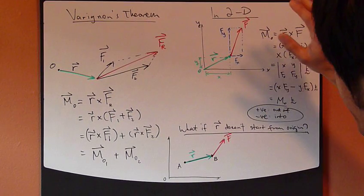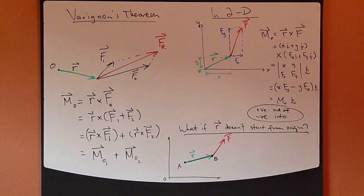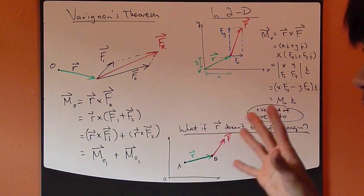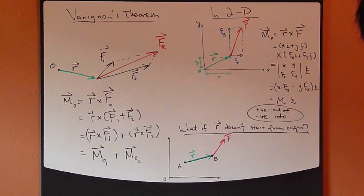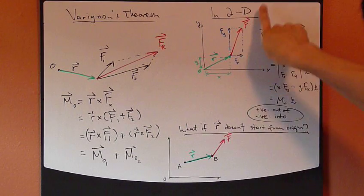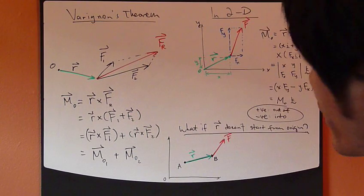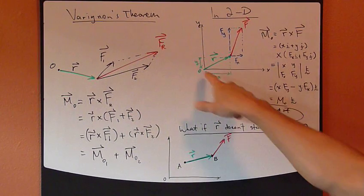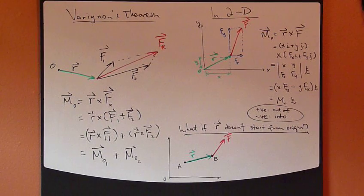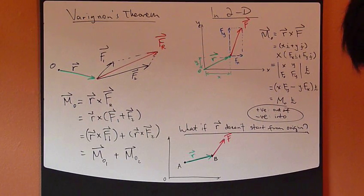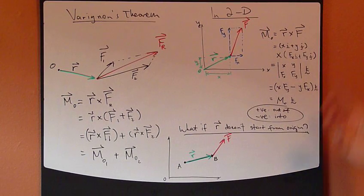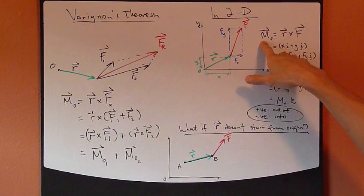So now kind of a special case. We talked about the general, like three-dimensional space. Now what if it's just a simple 2D case? Right, so force and then this R vector is all in 2D. Let's say X and Y dimensions. So everything should be reduced down to quite a simpler form.